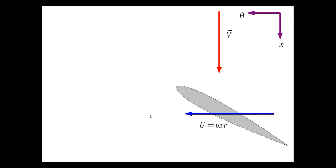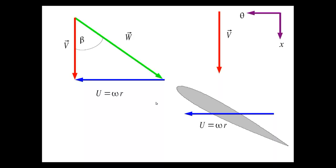To draw the velocity triangle, we first draw the flow we know — the absolute velocity v — then connect that with the frame velocity u, and close the triangle to give us the relative velocity w. We can check the triangle is correct by following the relative velocity then the frame velocity and confirming we end up at the same place as following v directly. You can see how this relative velocity, experienced if we were sitting on the wind turbine, gives a flow w quite different from the absolute flow v.